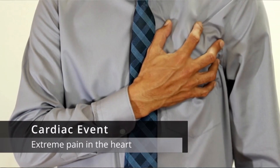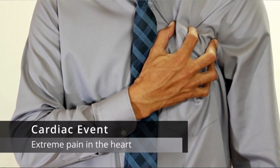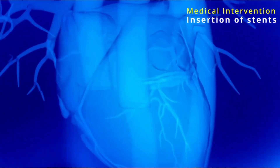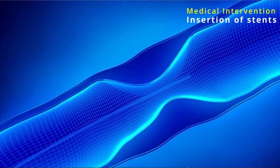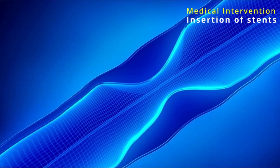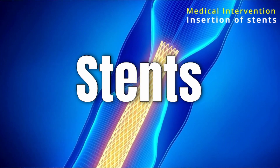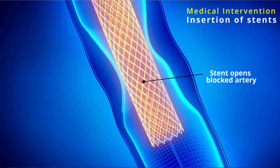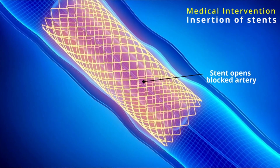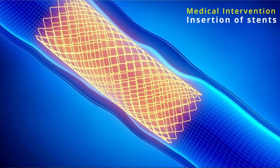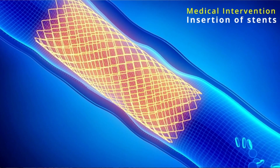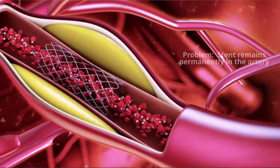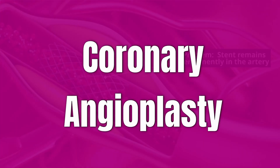With the formation of this cholesterol, the patient begins to experience a cardiac event, which is usually in the form of pain. They are rushed to a hospital where the surgeon will insert a stent into the artery. The essence of the stent is to open up the blood artery, and once it's opened up, the blood will begin to flow naturally as it used to be before. This procedure is called coronary angioplasty.